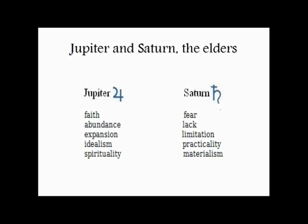Saturn represents our social duties, and in that context it represents literally the idea of the elders. It's very important to understand that Jupiter and Saturn are in themselves a polarity of sorts, so that when they come into interaction in a birth chart or in cycles, you have planets that are inherently complementary opposites.